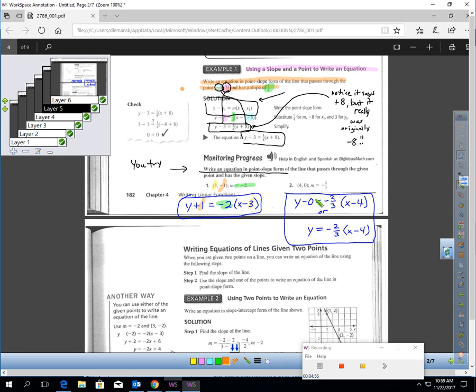Over here, slope's negative 2 thirds. I plug that in for m, and I plugged in 4 for x sub 1 and 0 for y sub 1. Either of these equations would be right. You could put y minus 0 equals negative 2 thirds, parentheses x minus 4. Or, y minus 0 is just y, so if you just simplified it to here, that'd be fine, too.